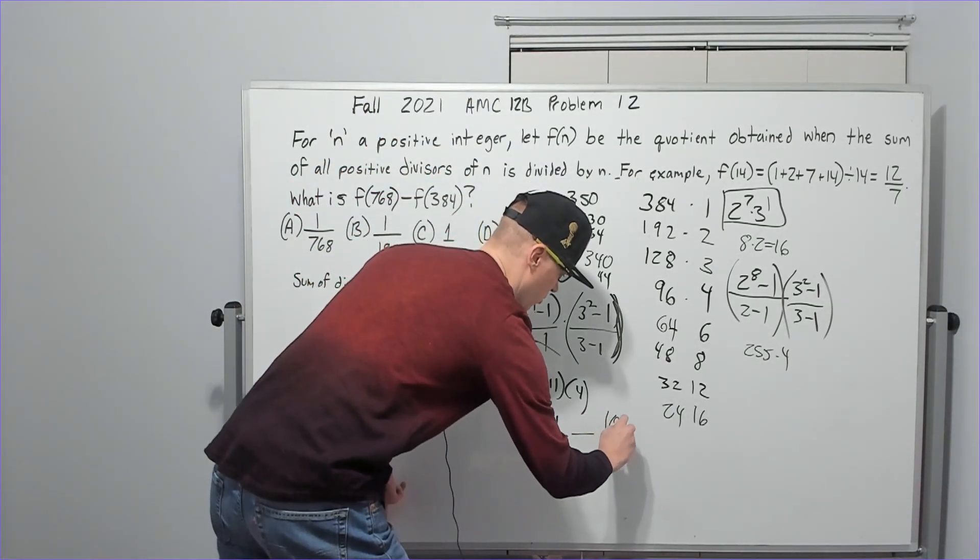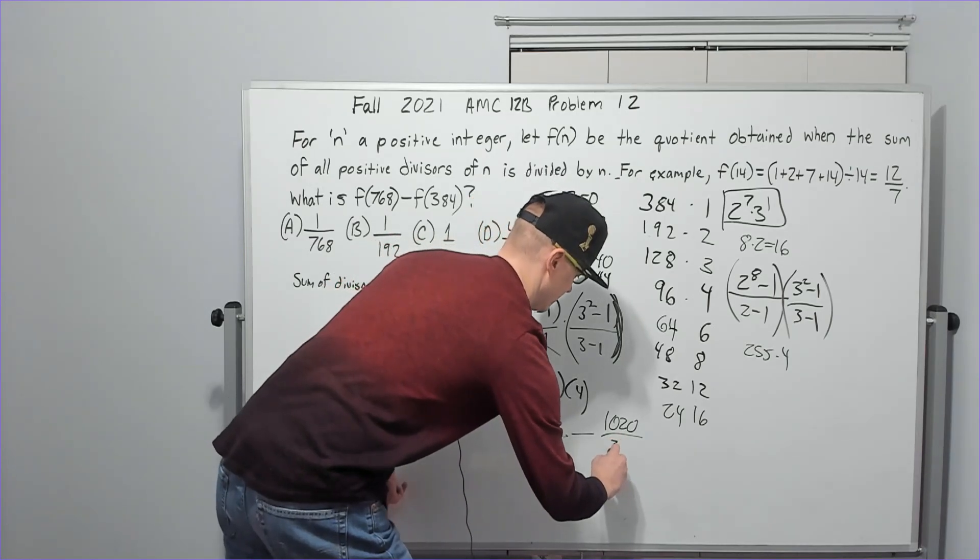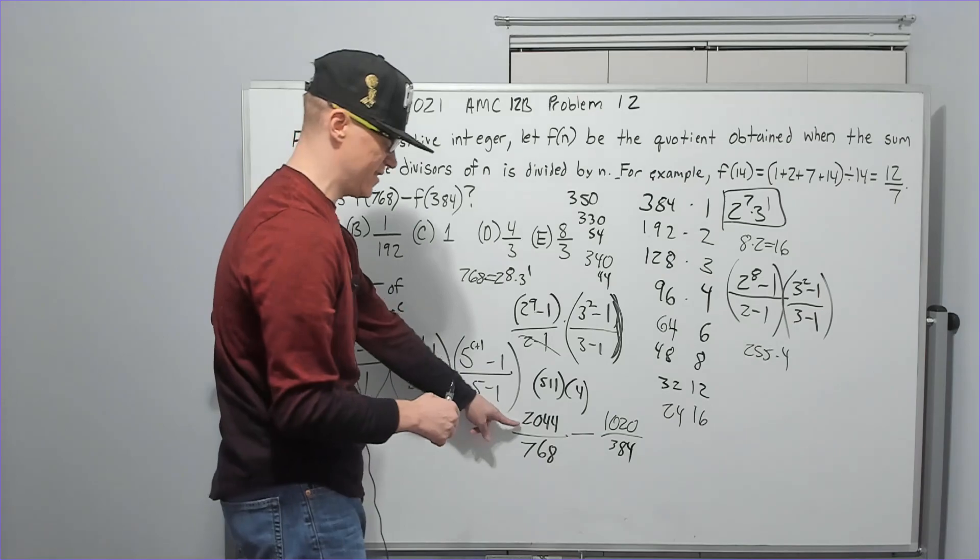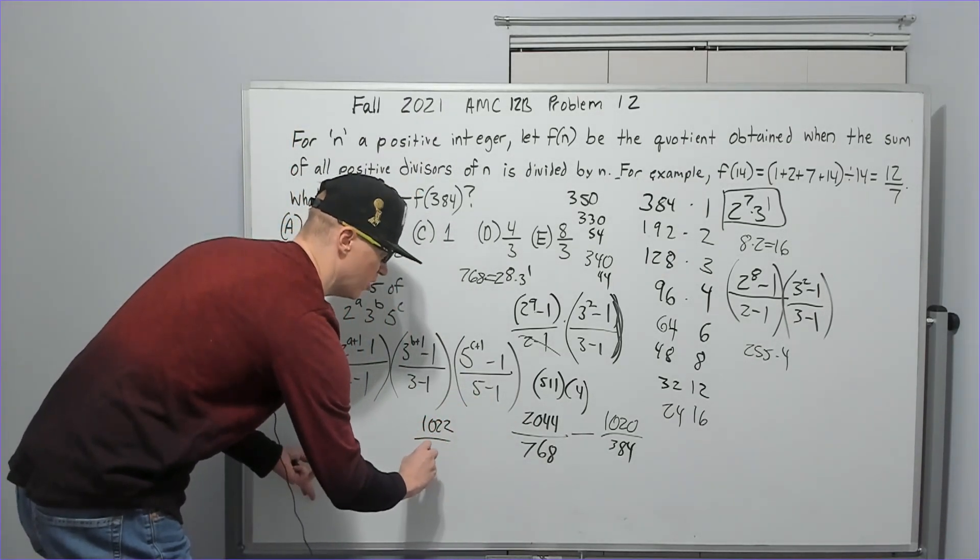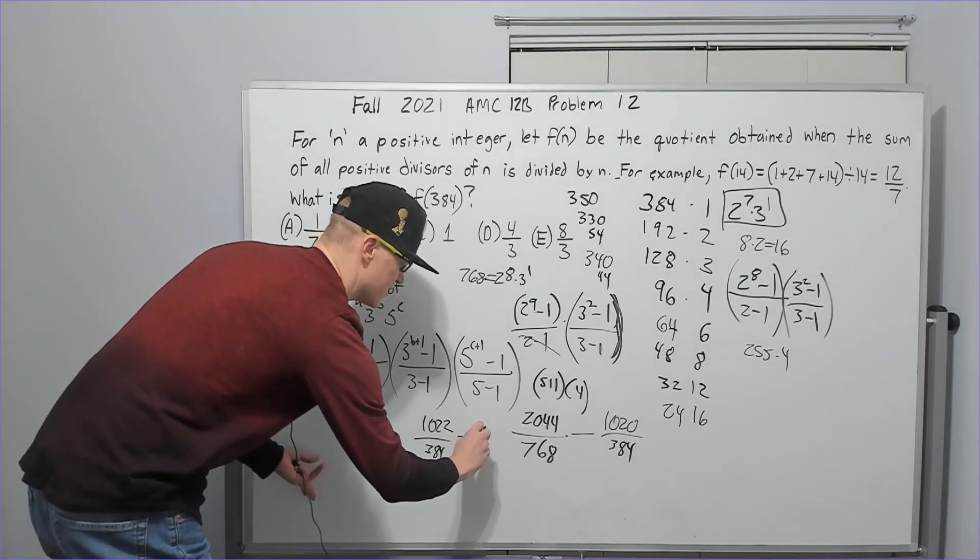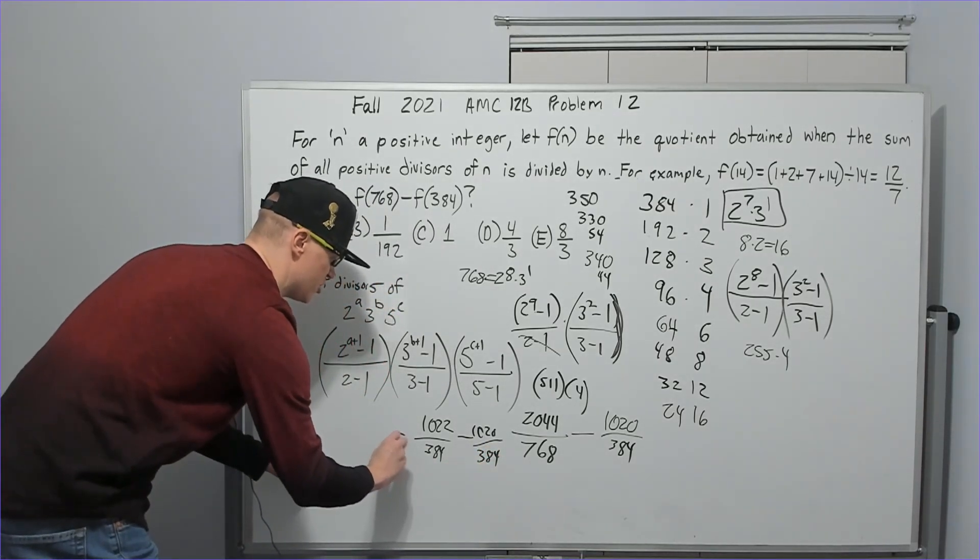At this point, you have your choice of how you want to do it. You can divide this by 2 and you will get 1022 over 384 minus 1020 over 384. That's going to give you 2 over 384. Simplify: 1 over 192.